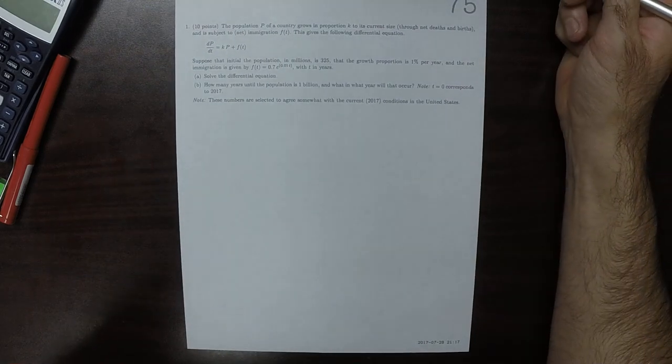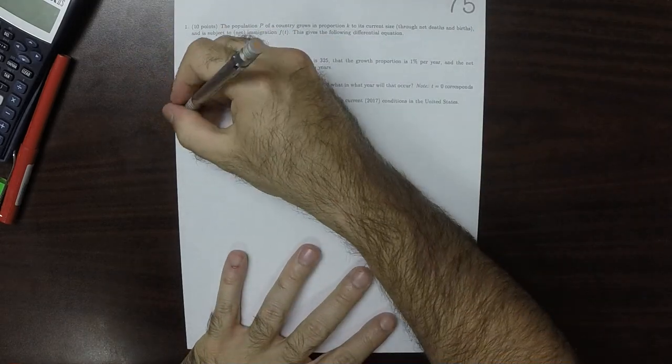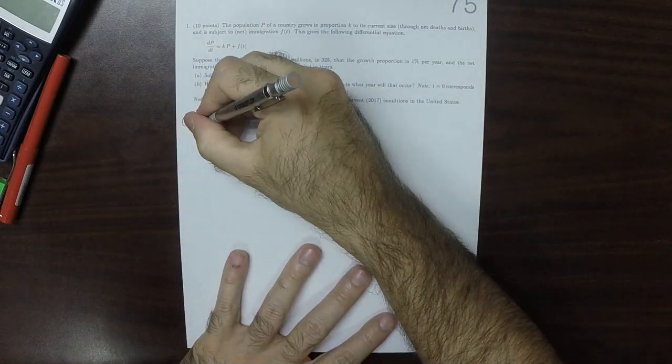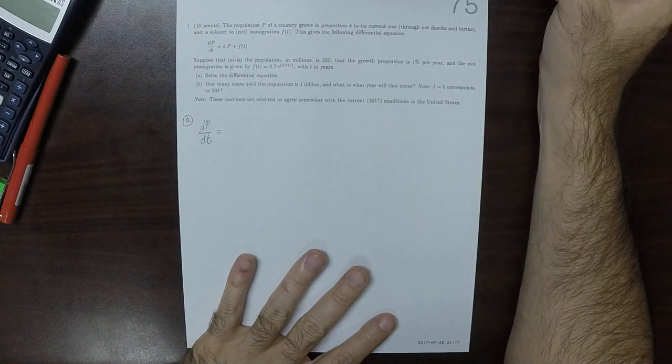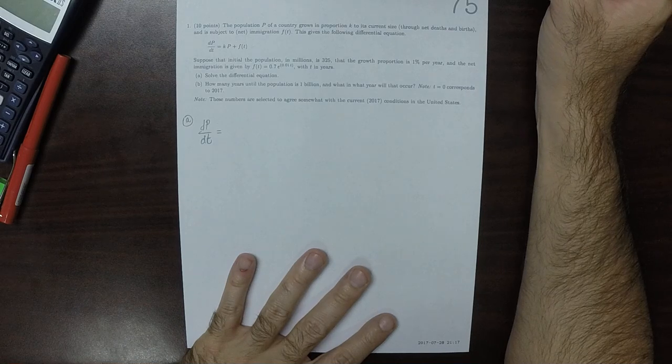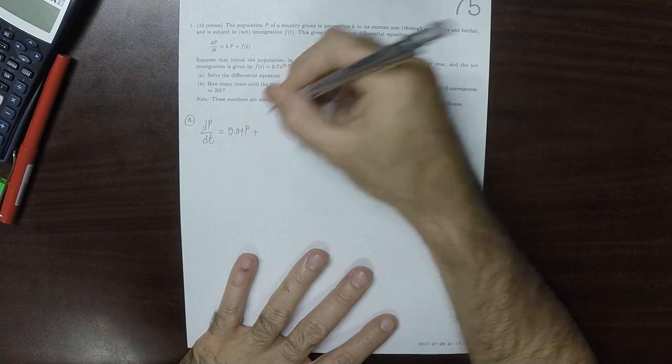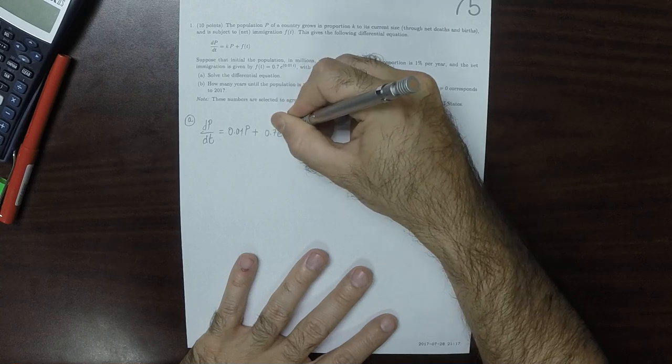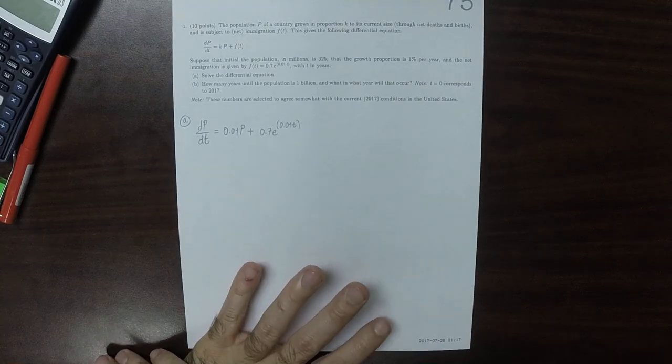This is the solution to written homework 75. Okay, so part A, the differential equation is dp/dt = 0.01p + 0.7e^(0.01t). So that's the differential equation.